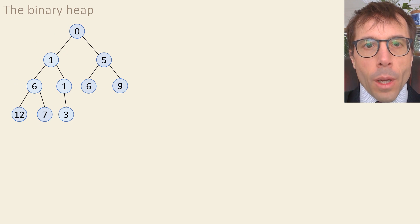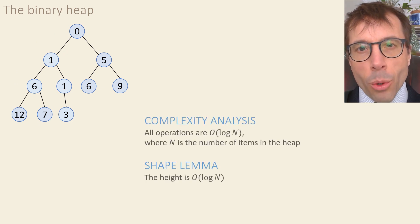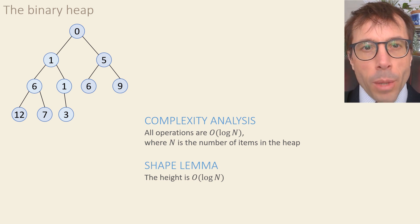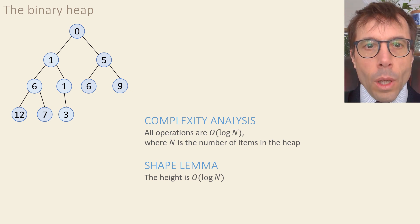Okay, let's review. The three operations are all very similar. They all involve going up or down the tree. So the running time complexity is O of the height of the tree. And because it's a nearly full binary tree, it's easy to work out the height. It's just log n, where n is the number of items in the heap.